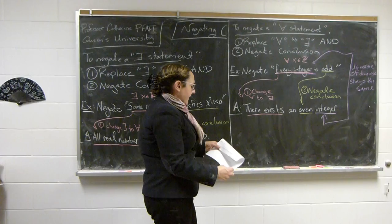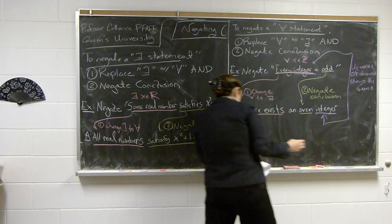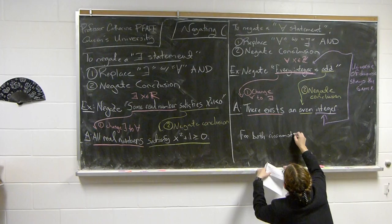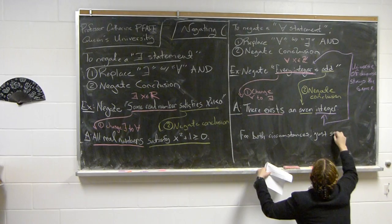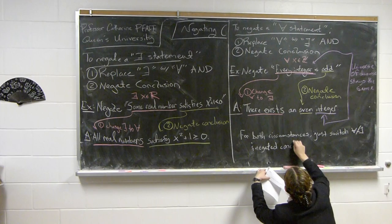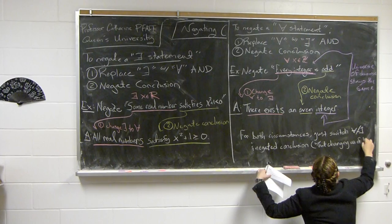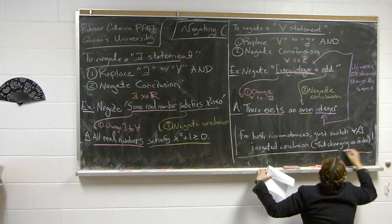For both cases, we just switched 'for all' and 'there exists' and negated the conclusion without changing the universe of discourse. That's the moral: in both circumstances, swap 'for all' and 'there exists' and negate the conclusion without changing the universe of discourse. That's how you negate quantifiers. Thank you so much.